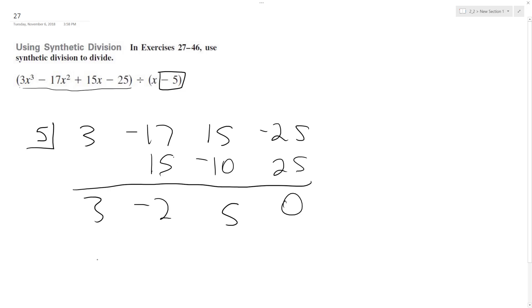So this is our result. There's no remainder, which is nice. The answer is 3x squared minus 2x plus 5. And that's it.